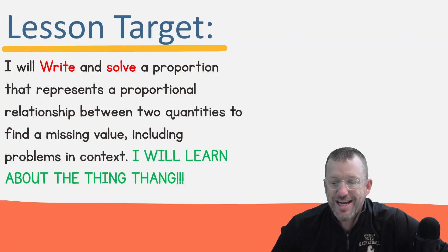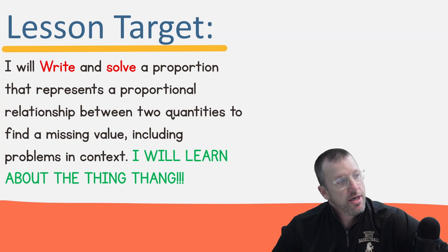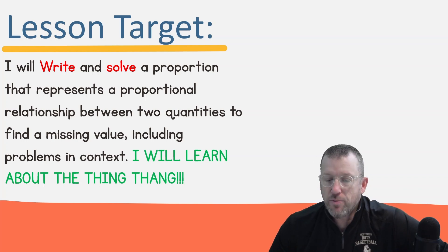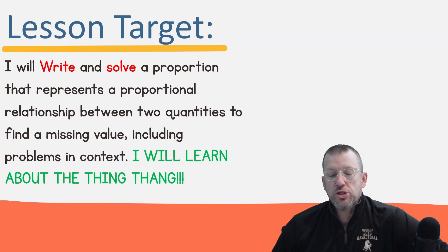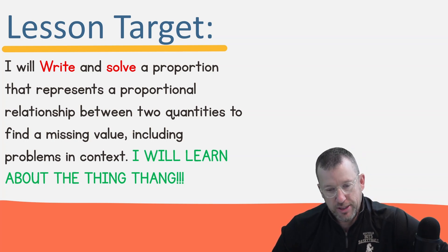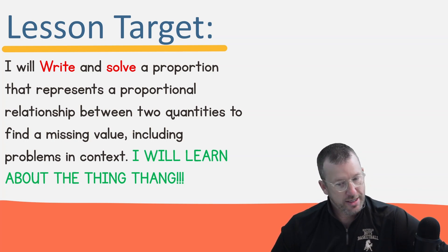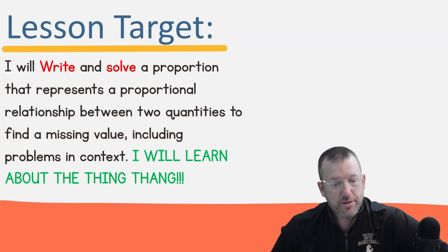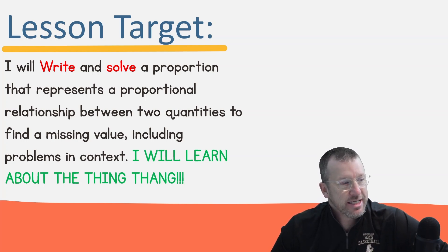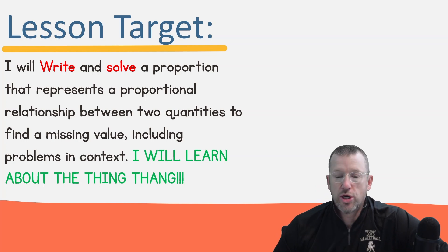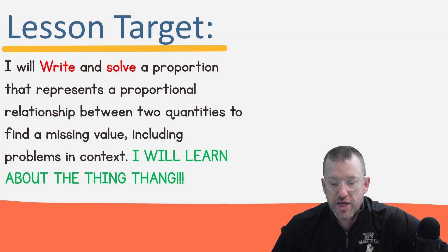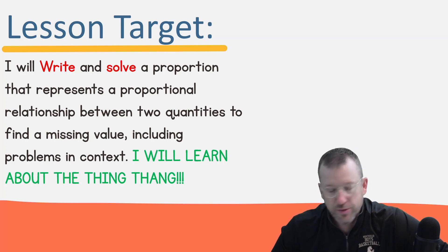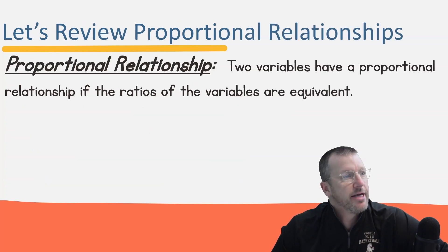Today we're going to talk about writing and solving a proportion that represents a proportional relationship between two quantities to find a missing value, including problems in context. And yes, I will learn about the thingy thang.